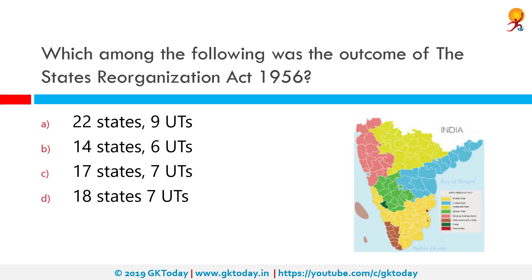Which among the following was the outcome of the States Reorganization Act of 1956? The outcome was 14 states and 6 union territories. The States Reorganization Act 1956 was a major reform of the boundaries of India's states and territories, organizing them along linguistic lines.